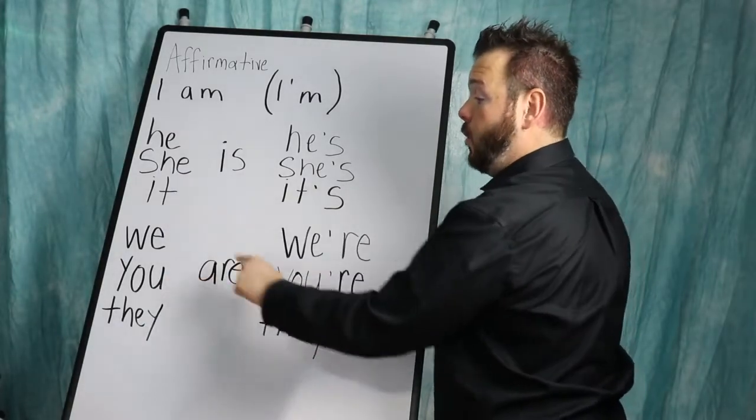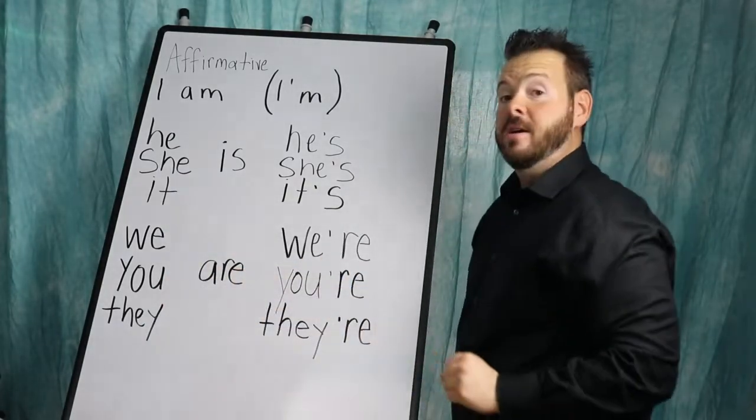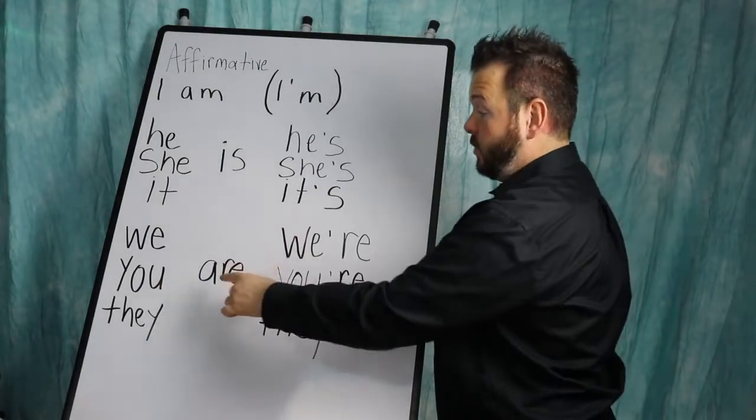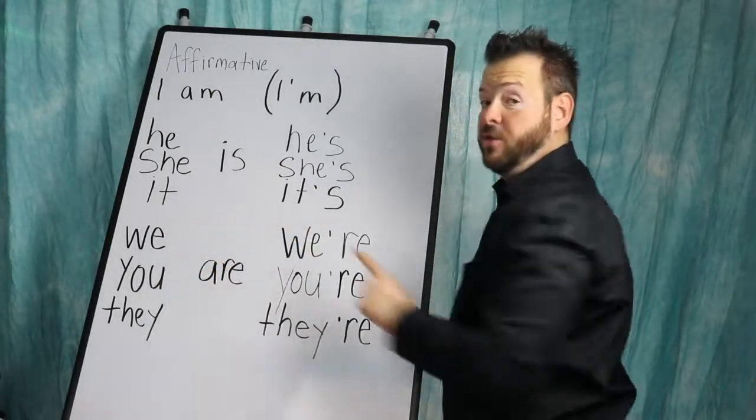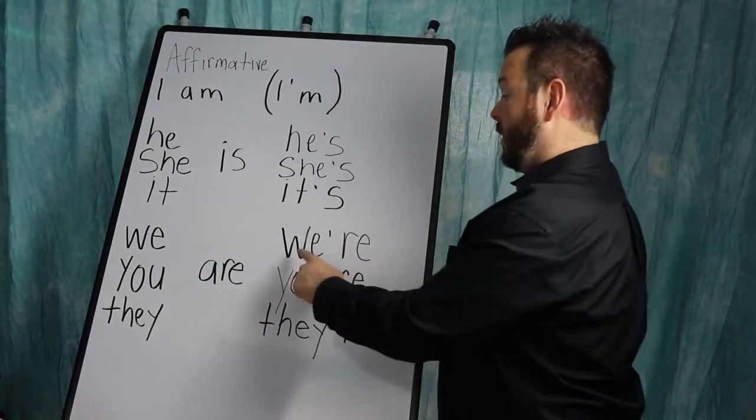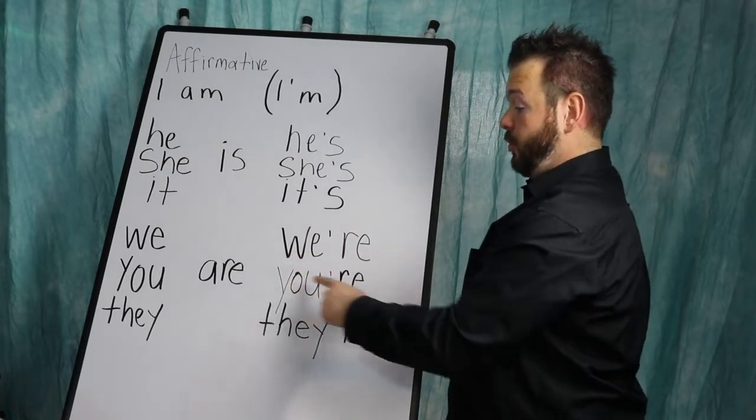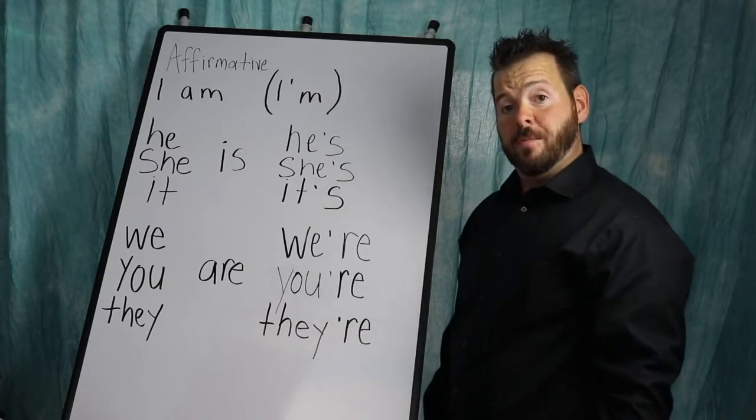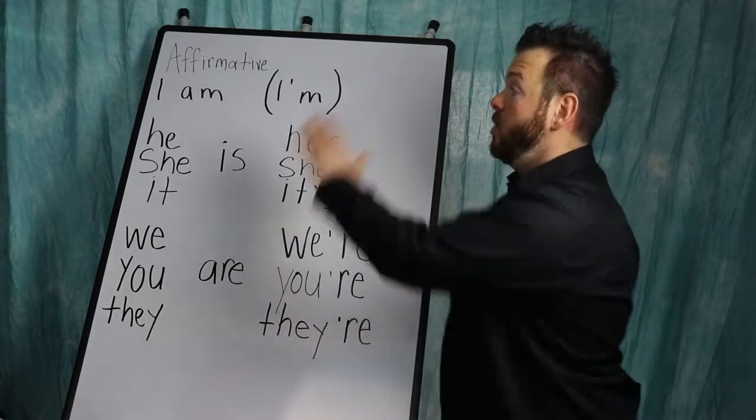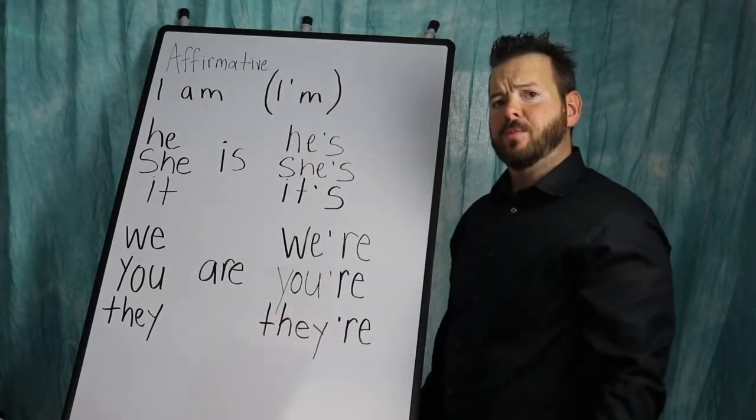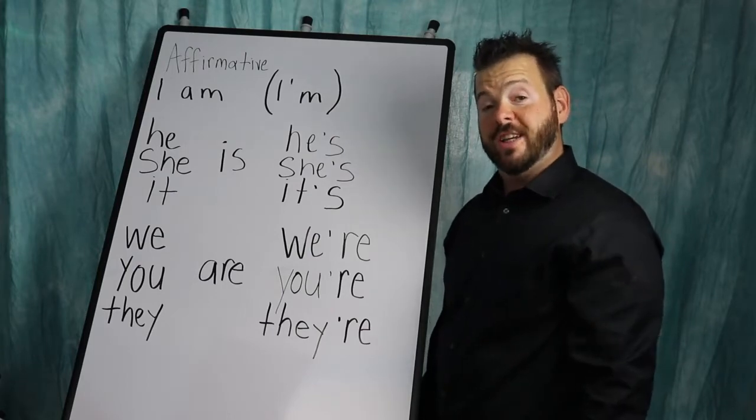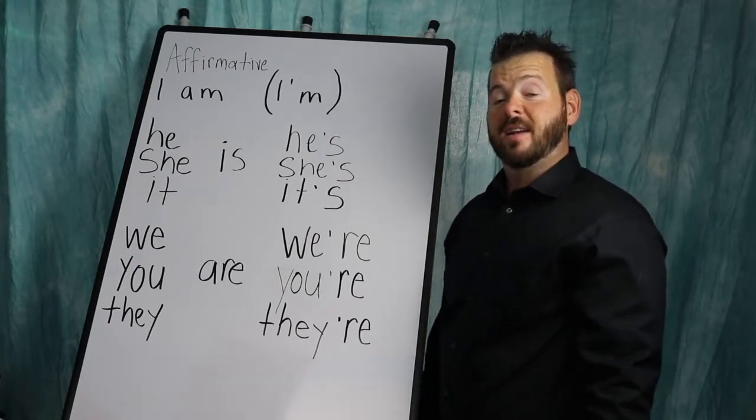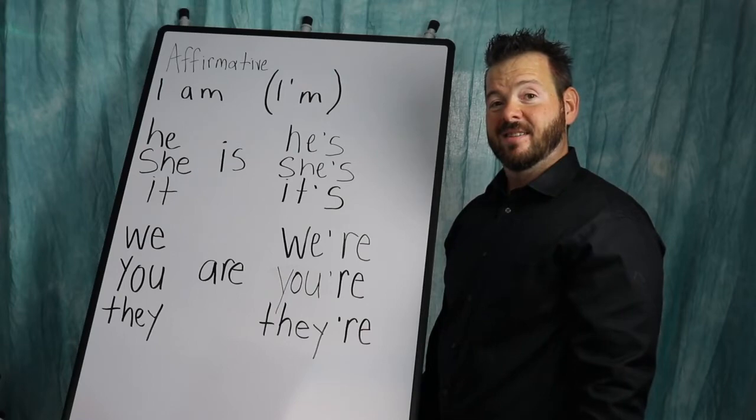We are, you are, they are becomes, as we just did, we drop the A because you can't have two vowels together. It becomes we're, you're, and they're. Pause for a moment the video at this point, write everything down because you might need it or you possibly will need it for the examples that I'll provide later in the lesson.